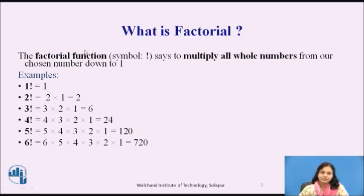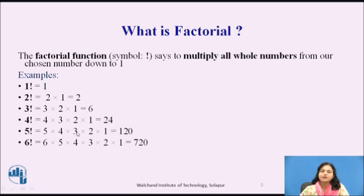Basically, what is the factorial? The factorial function symbol indicates that the chosen number has to be multiplied down to 1. So if it is 1, it will be 1 only; 2, then 2 into 1 is 2; 3 into 2 into 1 is 6; 4 into 3 into 2 into 1 is 24. Whatever the number, it has to be multiplied in sequence down to the last one, and that answer is what we calculate.